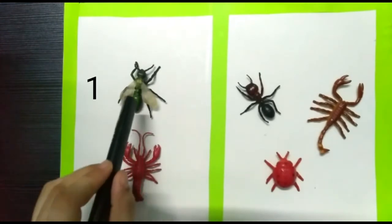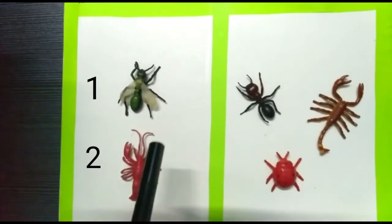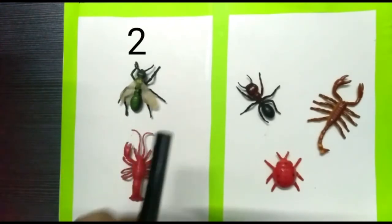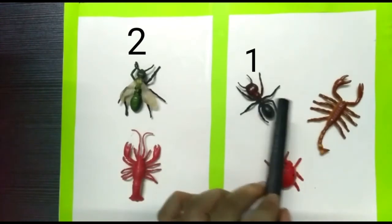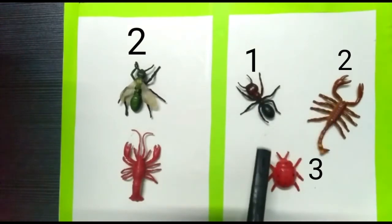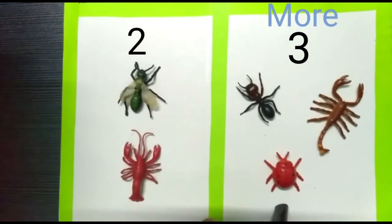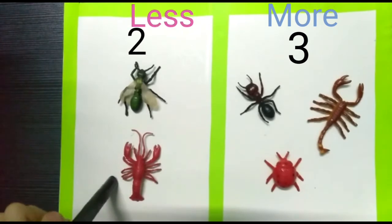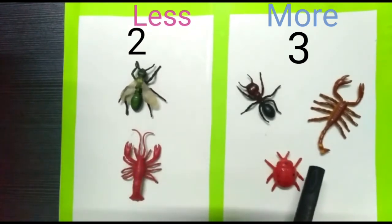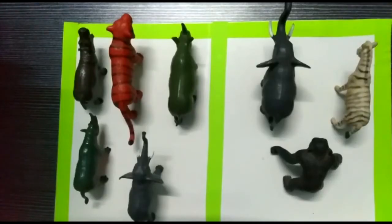Children, let's count the insects. One, two — two insects in this box. In the next box, one, two, three — we have three insects in this box. Now tell me, which box has more insects and which has less? This box has more insects and this has less. Less, more.